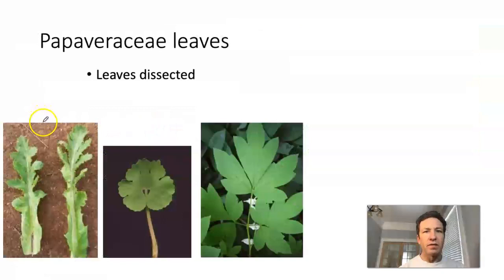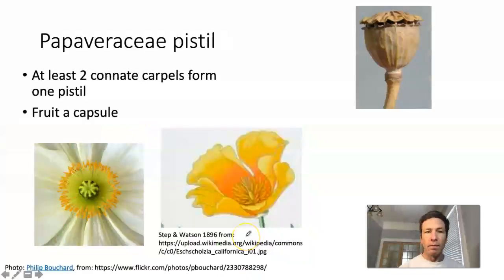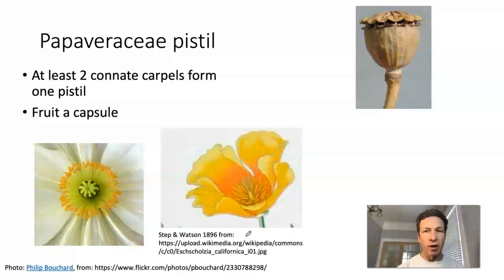Papaveraceae leaves tend to be lobed, dissected, or compound. You can see an example of a dissected leaf with breaks going almost to the mid-vein. In the middle picture you can see lobes, and in the right-hand picture an example of a leaf that is actually compound. Another defining characteristic of the Papaveraceae, or the poppies, are that they have connate carpels forming a single pistil. This has been unusual so far — I think the only example we've seen of this thus far is Nymphaceae, the water lilies, but here we'll see it for a second time.